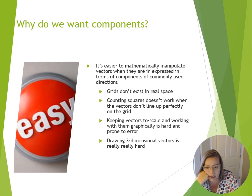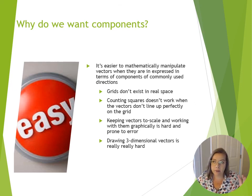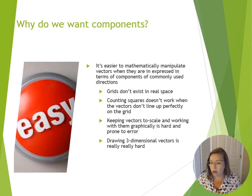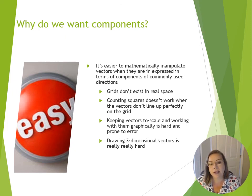You might ask why we need to find components along particular directions. It makes our lives easier when we eventually write vectors in component form. Instead of drawing resultants and scaling vectors by hand, finding components along directions of interest makes the math more exact. We will use this very soon when calculating vector components in the Cartesian coordinate system.